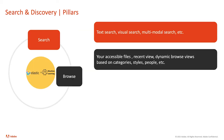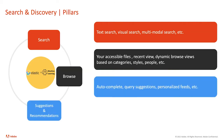The second major pillar for us is browse. The Search and Discovery platform powers things like files you have access to, your recent views, dynamically creating views based on different categorizations and styles, people, faces, and all that. The third pillar is suggestions and recommendations — examples include autocomplete, query suggestions, personalized feeds. Personalized feeds are known from YouTube and Netflix.